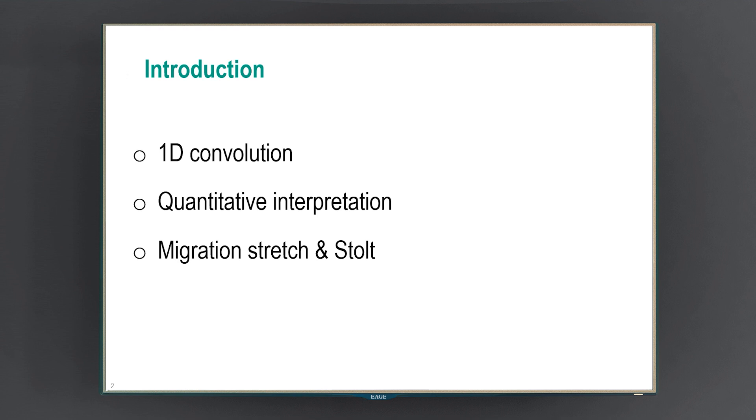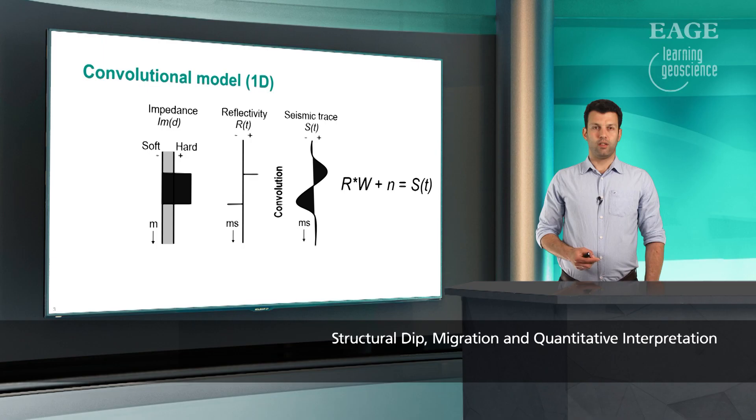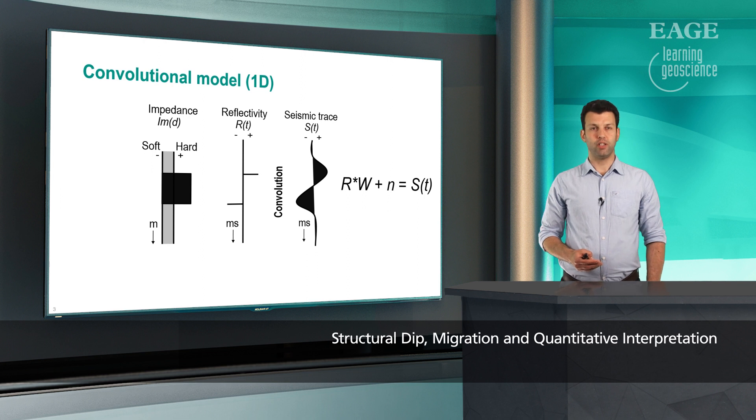The outline of my talk is a quick introduction or reminder on 1D convolution, quantitative interpretation and migration, stretch and Stolt formula.